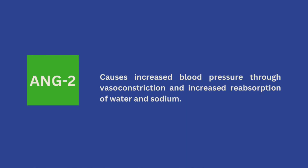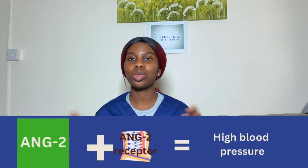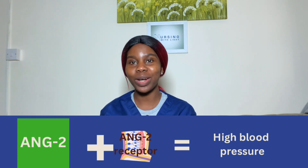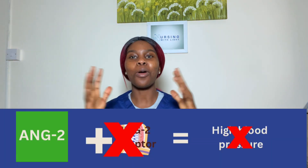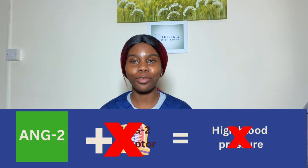Now talking about Angiotensin 2 Receptor Blockers: Angiotensin 2 causes blood pressure to increase through vasoconstriction and by causing the body to reabsorb sodium and water, increasing plasma circulating volume. So if we stop Angiotensin 2 from doing its work, blood pressure will not increase. Angiotensin 2 Receptor Blockers stop Angiotensin 2 from binding to its receptors, so it cannot do its work and blood pressure drops.